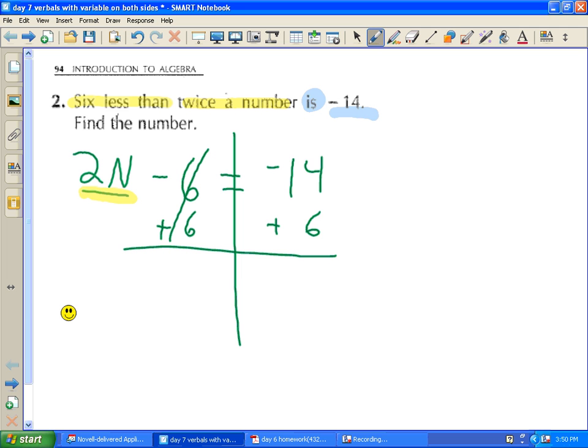Negative six plus six is zero so it goes away. The 2N nothing is being done to it so it stays the same equals negative eight.